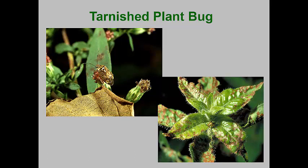In urban landscapes, tarnish plant bug damage is usually scattered among many plants, so it is often missed. The adults also feed in the bases of flowers and developing seed pods, which can destroy the developing seeds. This is especially important in flower and vegetable seed production nurseries.